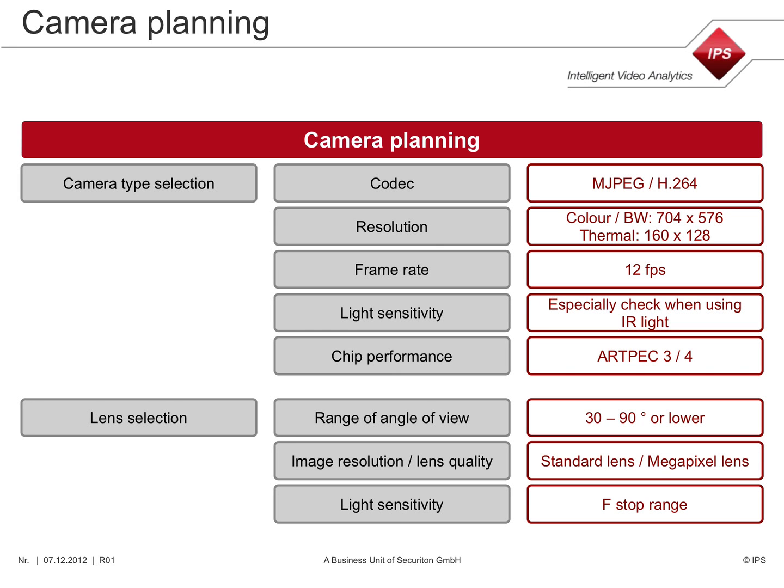Here the basic properties of a camera are listed. Check if the required codecs are supported, if the image resolution is sufficient both for analytics and for display, and if the frame rate is high enough. When you estimate the light sensitivity, you should take into account that the maximum exposure time is 1/25th of a second. If using infrared illumination, be aware of the sensitivity of the camera chip in the wavelength range of the illuminator.